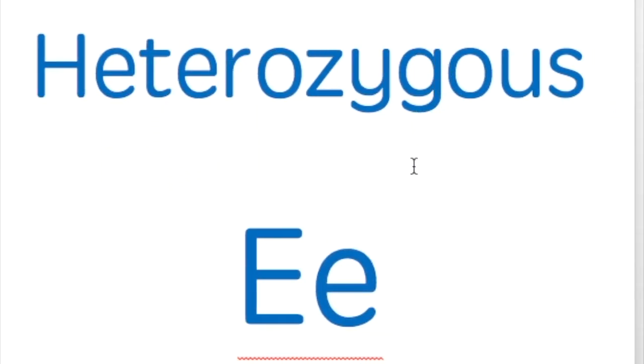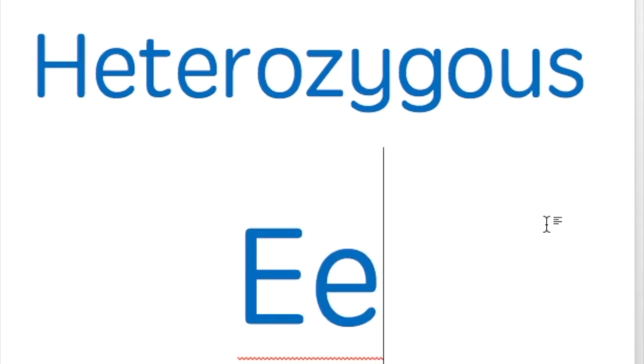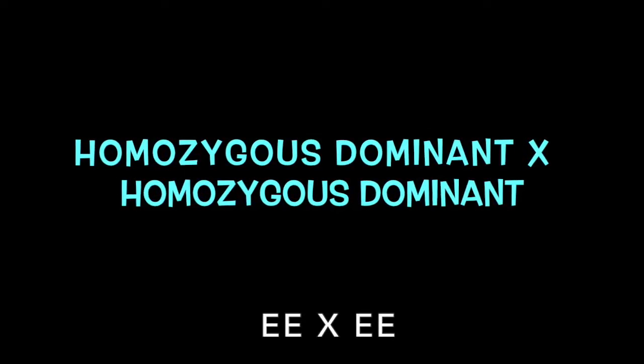Homozygous recessive is actually redundant, because if it's recessive it has to be homozygous in order to be expressed. The third combination is heterozygous — not heterozygous dominant, not heterozygous recessive, but one of each. Hetero is the prefix for mixed, so mixed zygote: capital E lowercase e. This one looks dominant because the capital E overpowers the other, but it carries that hidden recessive e as well.